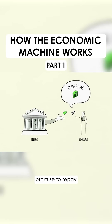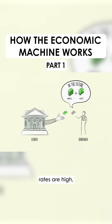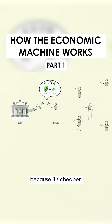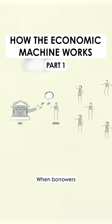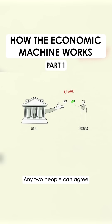Borrowers promise to repay the amount they borrow, called principal, plus an additional amount, called interest. When interest rates are high, there is less borrowing because it's expensive. When interest rates are low, borrowing increases because it's cheaper. When borrowers promise to repay and lenders believe them, credit is created. Any two people can agree to create credit out of thin air. That seems simple enough, but credit is tricky because it has different names. As soon as credit is created, it immediately turns into debt.